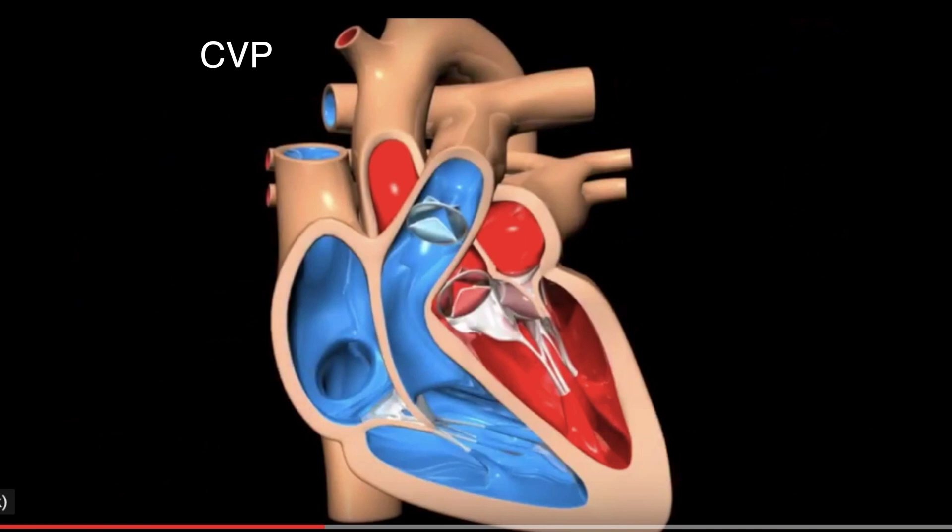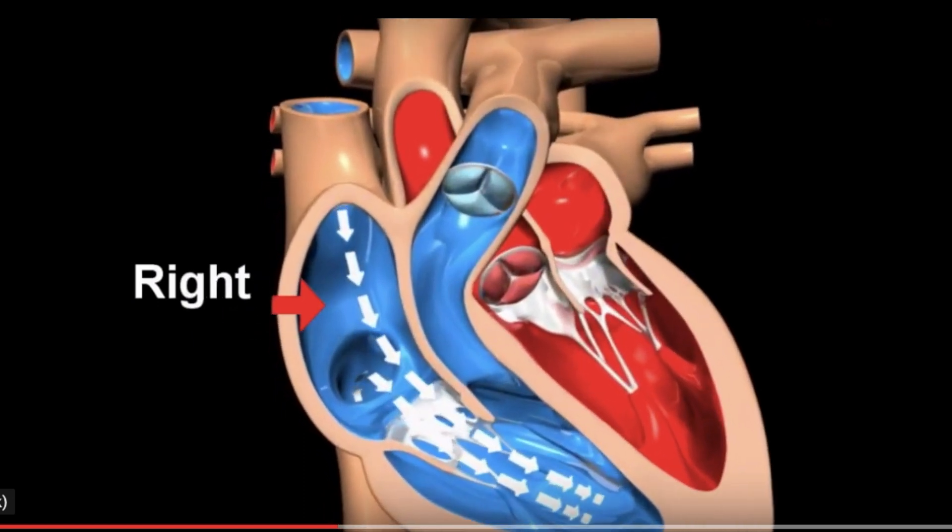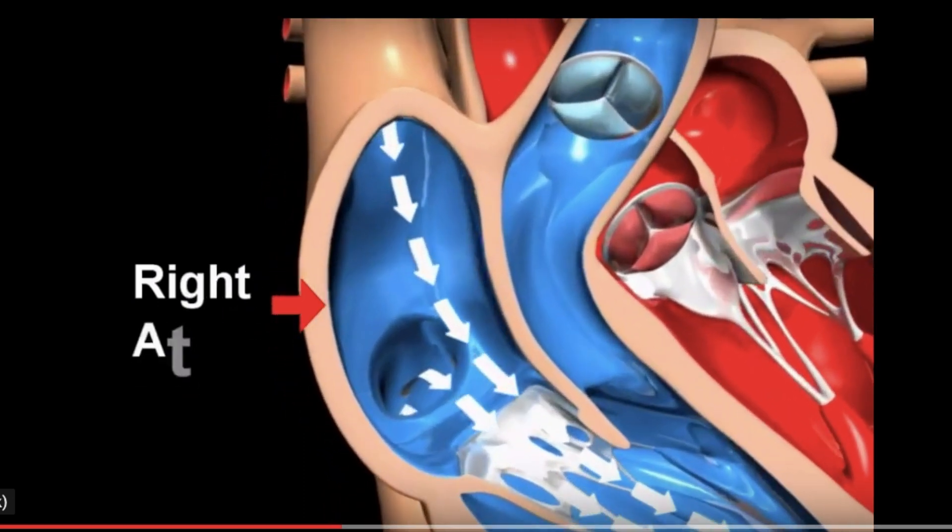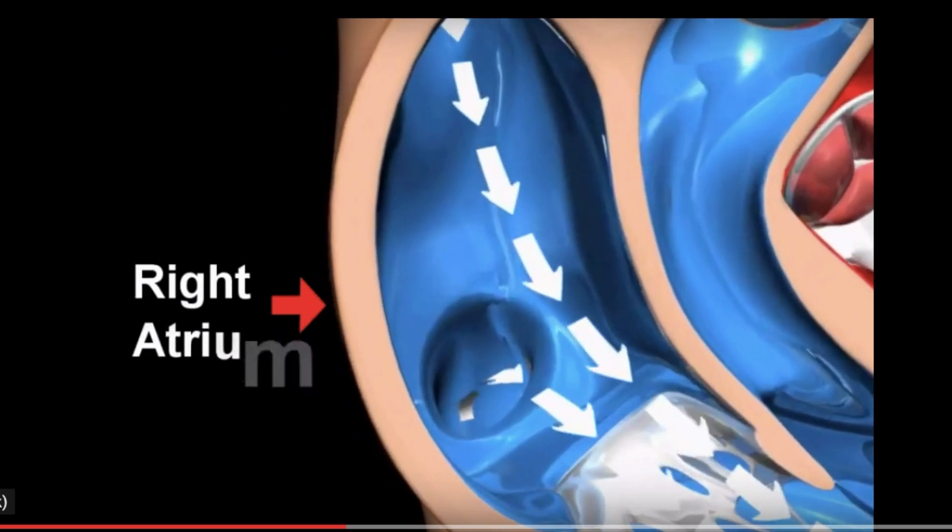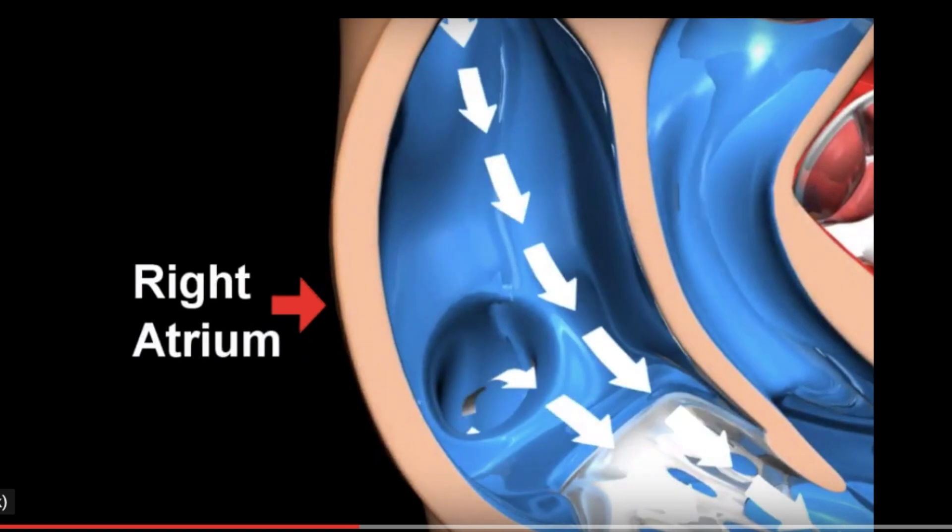The Swan-Ganz measures central venous pressure. Central venous pressure is the reflection of the pressure in the right side of the heart. The normal value is 2 to 6 mm of mercury. Central venous pressure monitors the fluid status of the patient.